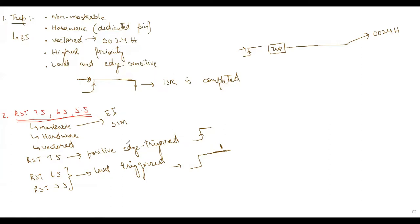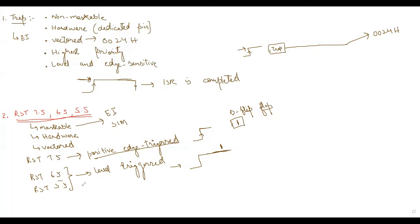Since RST 7.5 is positive-edge triggered, when this interrupt is raised it is internally stored as a 1-bit value in a D flip-flop. When the signal goes from low to high, this bit is set to 1, meaning the interrupt should be handled. There is no such flip-flop mechanism for RST 6.5 and RST 5.5.